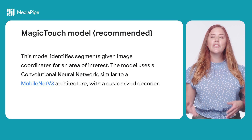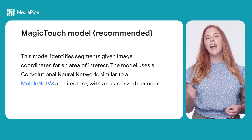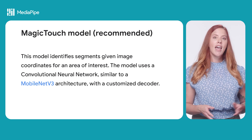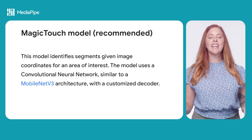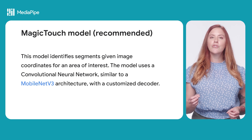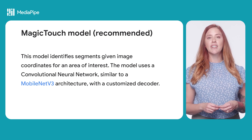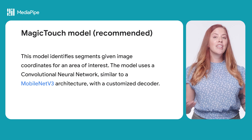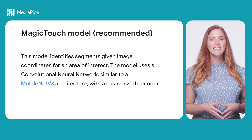To get started using the Interactive Segmentation task for the web, we will first take a look at the available model Magic Touch. This model identifies segments given image coordinates for an area of interest. It uses a convolutional neural network similar to a MobileNet V3 architecture with a customized decoder. The available models might change over time, so definitely check the docs for the latest details.